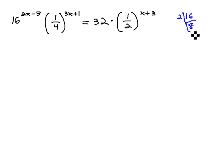16, we can factor by dividing by 2, 8, dividing by 2, 4, divide by 2, 2, divide by 2, 1. So, 16 is 2 to the 4th power, with a 2x minus 5 on it.